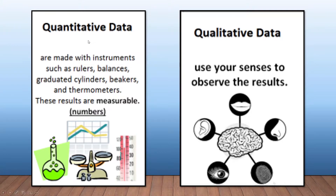Quantitative data are made with instruments such as rulers, balances, cylinders, beakers — all of those things. These results are measurable, and that's when we talk about our numbers.